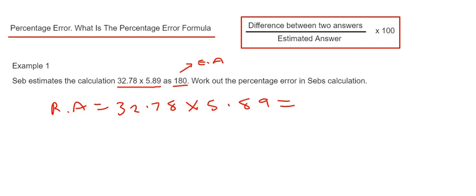That will give 193.0742. So we now need to work out the top bit of our formula—that's the difference between the real answer and the estimated answer. So we take 180 from 193.0742.